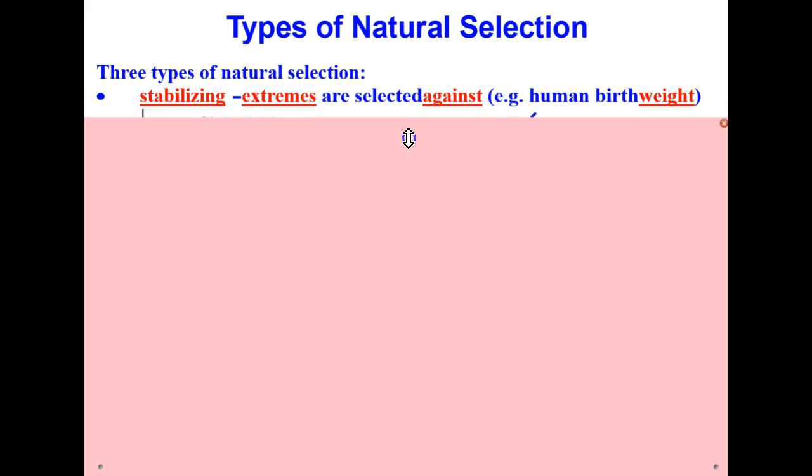Welcome to the lesson on the types of natural selection. This lesson will be discussing the three types of natural selection including stabilizing selection, directional selection, and disruptive selection. Let's start with stabilizing selection. In stabilizing selection, extremes are selected against.